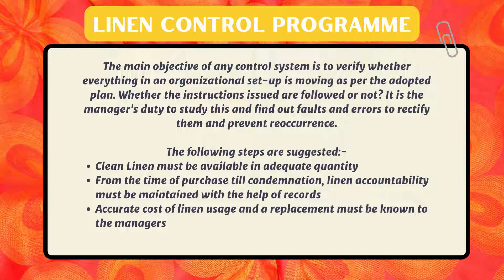The main objective of any control system is to verify whether everything in an organizational setup is moving as per the adopted plan, and whether instructions issued are being followed or not. It is the manager's duty to study this and find out the faults and errors to rectify them and prevent recurrence. The following steps are suggested: clean linen must be available in adequate quantity from the time of purchase and condemnation; continuity must be maintained; and accurate cost of linen usage and replacement must be known to the managers.